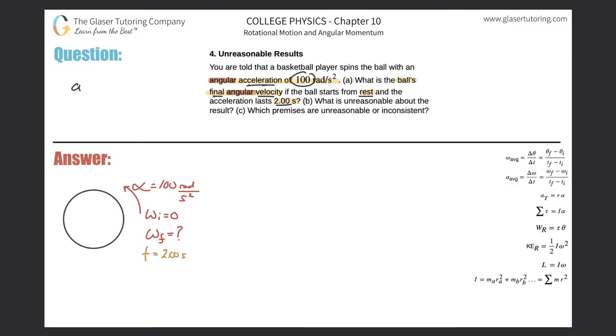You're thinking to yourself, well, I know acceleration, check. I know the initial velocity that was zero. I know the time, check, and I'm asked to find the final velocity. That's the question. You might say to yourself, easy, kinematics, right? I should use the formula final velocity is equal to initial velocity plus acceleration times time, and voila.